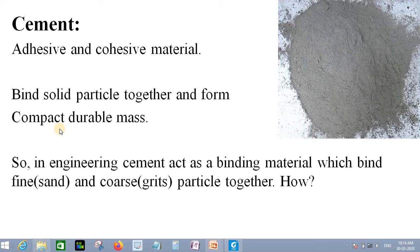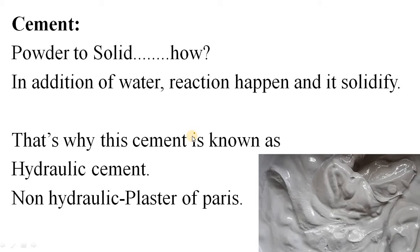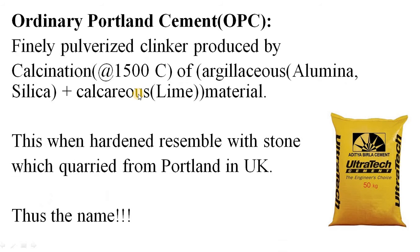But how can a powder-type material do this? Normally, without water, cement is just a powder. But when you add water to cement, some reaction happens and the cement solidifies. We will discuss how this happens in a few minutes. This is the basic thing: cement is normally a powder-type material, and when you add water, some reaction occurs, compounds are formed, and the powder solidifies.